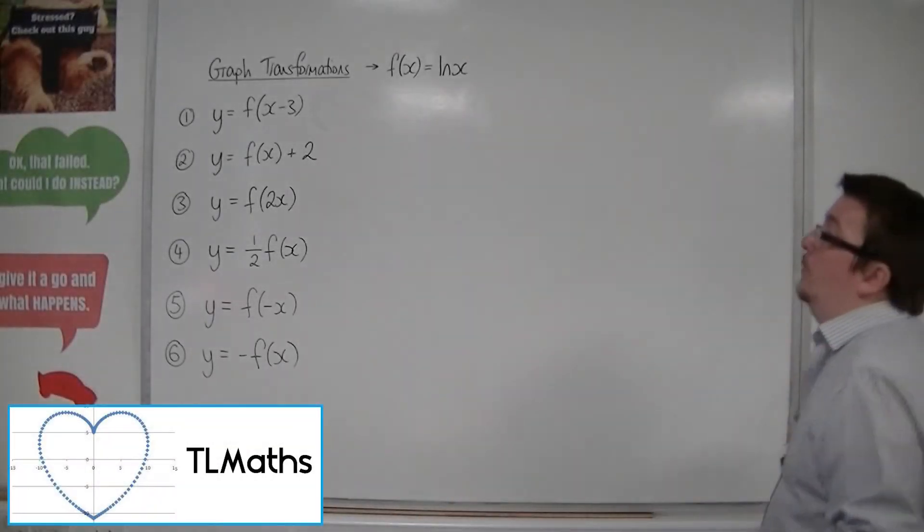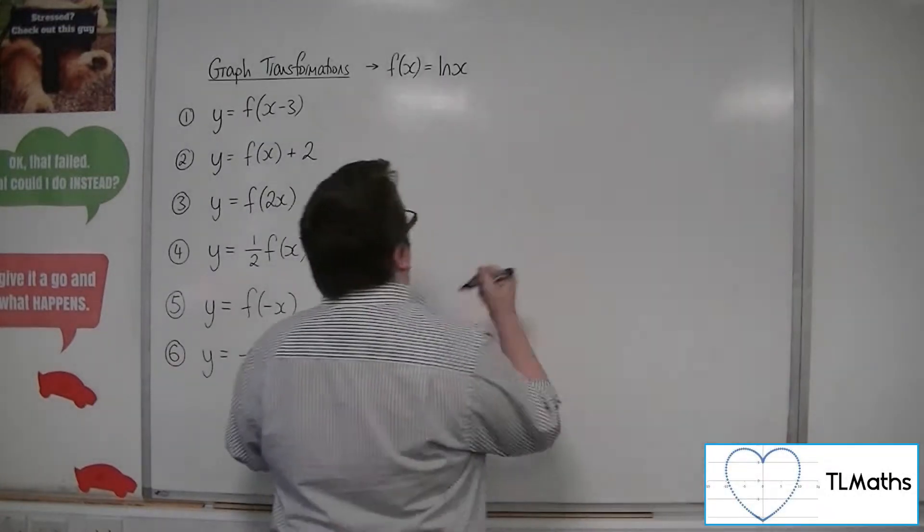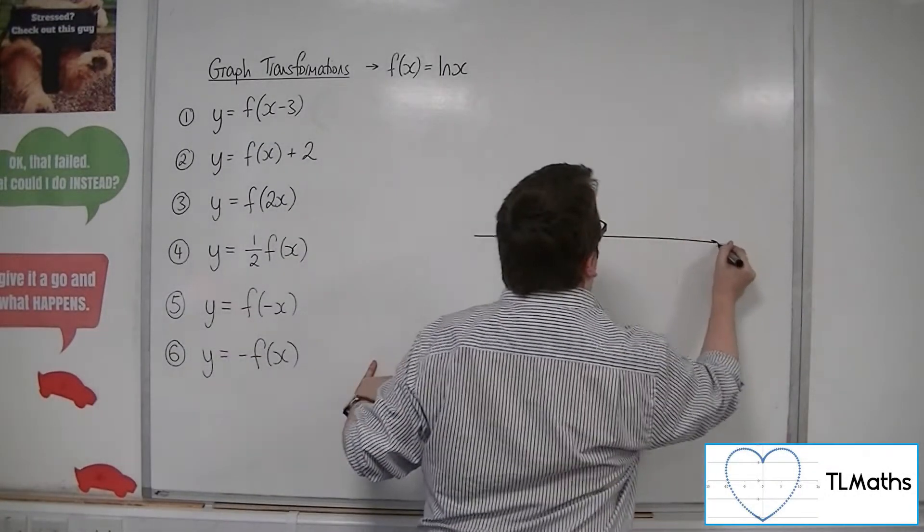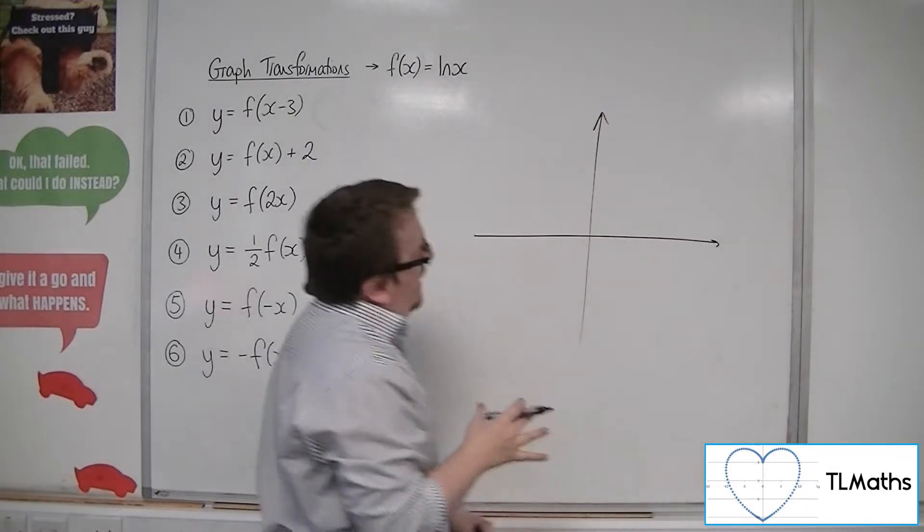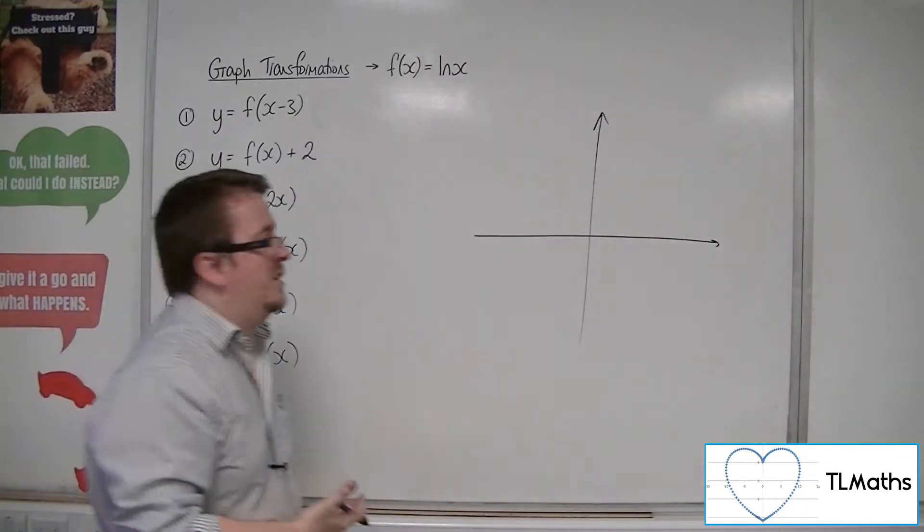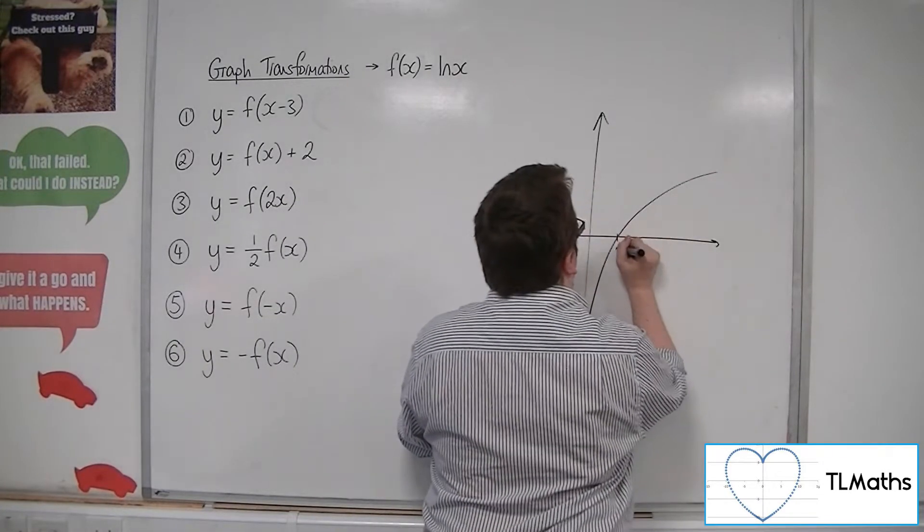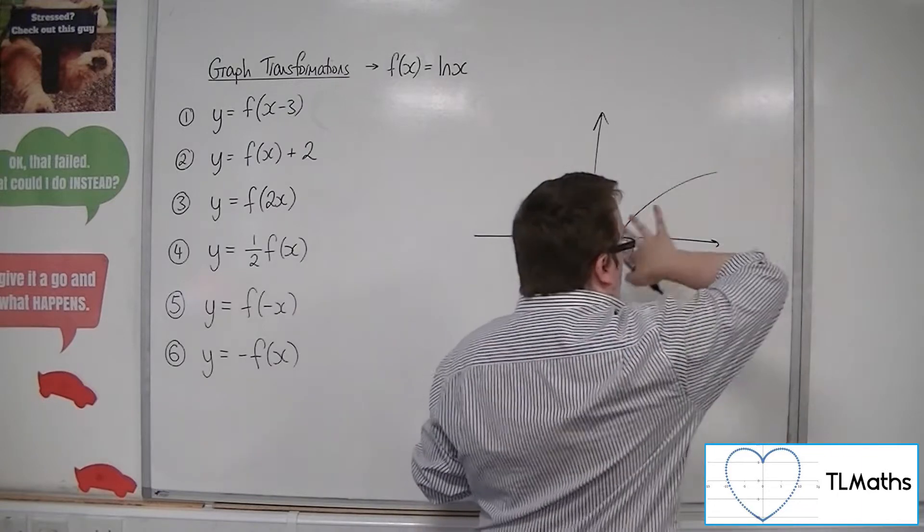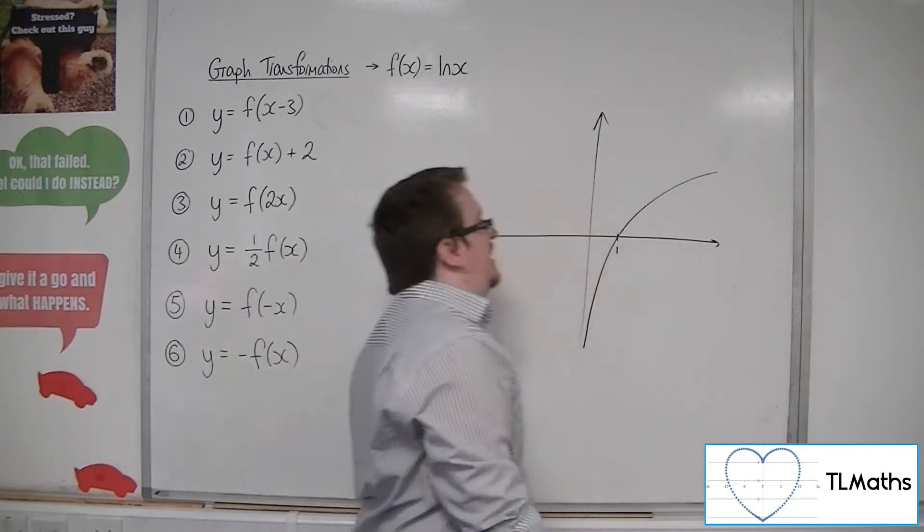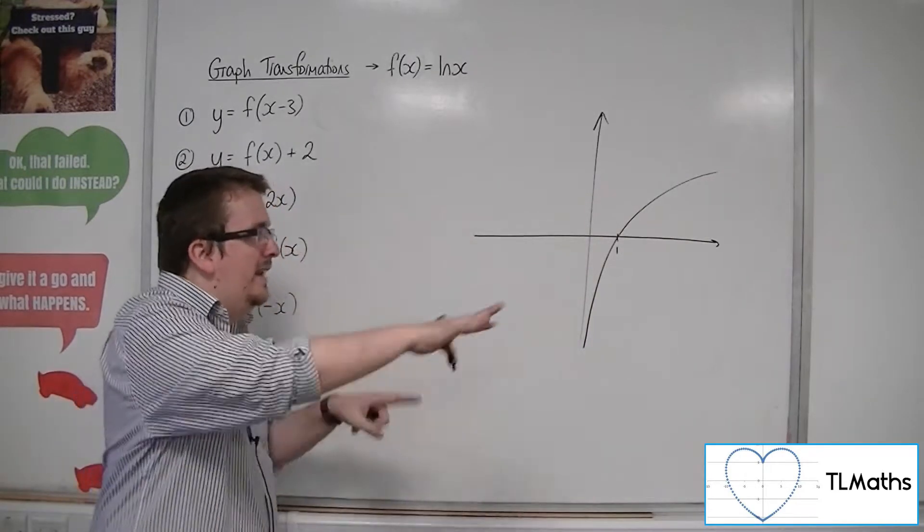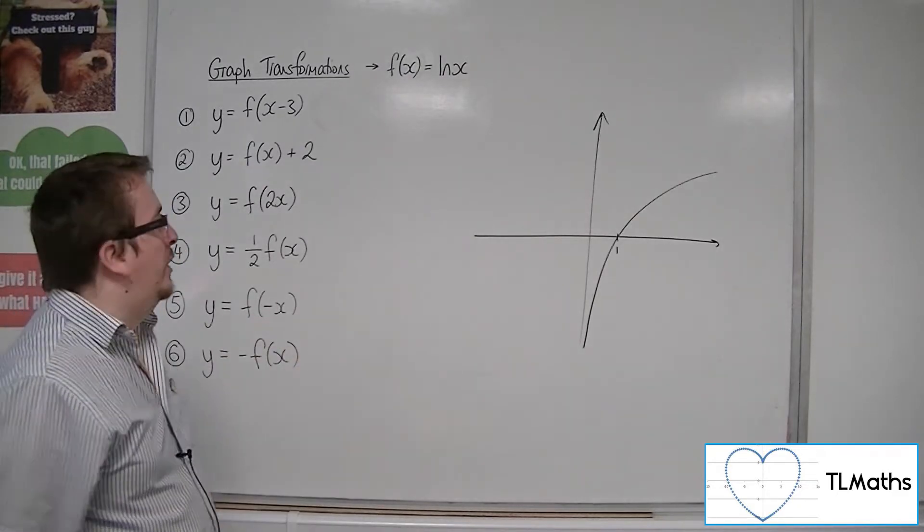So now we're going to look at f(x) equals ln(x), natural log of x. Let's have a look at what it looks like first, and then let's start applying transformations to it. So ln(x) has a vertical asymptote at x equals 0, and looks like this. So it's always increasing, but it gets slower and slower at increasing. It crosses through 1 on the x-axis, and that's the curve we'll be looking at.